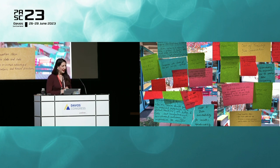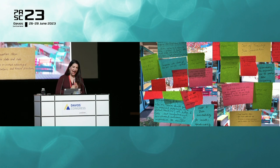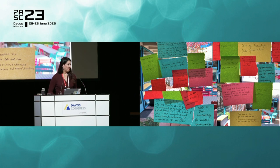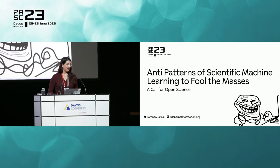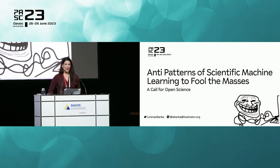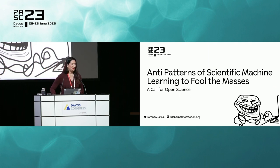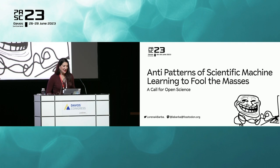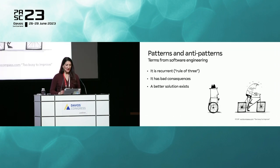This talk is inspired by the conversations at the workshop and my own personal frustrations reading the avalanche of literature on machine learning applications in computational science. I've titled it 'Anti-Patterns of Scientific Machine Learning to Fool the Masses,' crediting David Bailey, who gave a famous talk called '12 Ways to Fool the Masses' targeting HPC and performance-related claims. I've used this before in terms of reproducibility, but now I'm focusing on scientific machine learning.